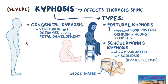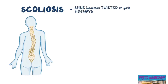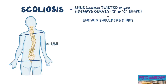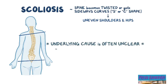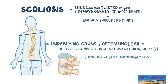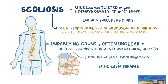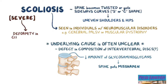In general, if the condition is severe, it can reduce the space in the thoracic cavity, which can compress the heart and prevent the lungs from fully expanding. Finally, there's scoliosis, which is when the spine becomes twisted or develops a sideways curve, resembling an S or a C shape, often resulting in uneven shoulders and hips. The majority of the time, the underlying cause is unclear, and it's thought that it may be due to a defect in the composition of the intervertebral discs. These discs have a reduced amount of glycosaminoglycans, which changes their ability to act as shock absorbers, and causes the spine to become misshapen. Scoliosis is often seen in individuals with neuromuscular disorders that cause progressive muscle weakness, like cerebral palsy or muscular dystrophy. In severe scoliosis, there can be a deformity in the chest cavity, compressing the heart and the lungs, similar to what's seen in severe kyphosis.